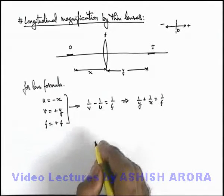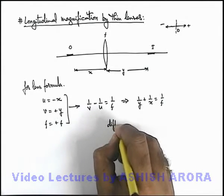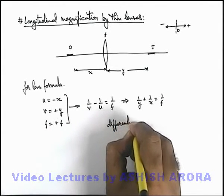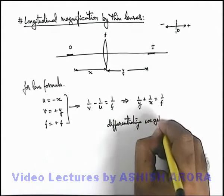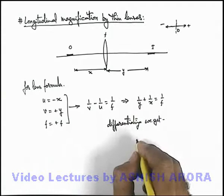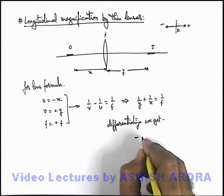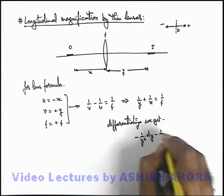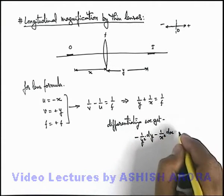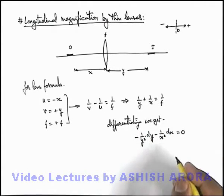Here if we differentiate this expression, on differentiating we are getting minus 1 by y square dy minus 1 by x square dx, and as focal length of the lens is a constant, it can be taken as zero.